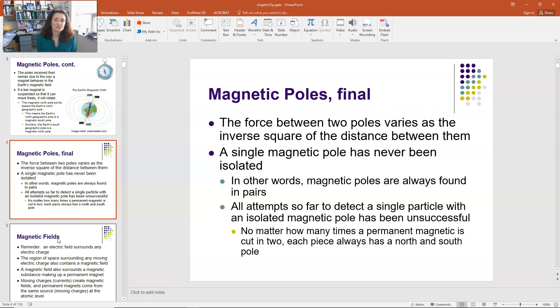Now, although Dirac did postulate the existence of particles which were magnetic monopoles in the 30s, we have not yet found a single magnetic pole. By that, I mean we haven't found a particle that only has one magnetic pole. We haven't found a south pole particle or a single north pole particle. They always come in pairs, right? Even at the atomic level. And all attempts so far to detect a single particle with an isolated magnetic pole have been unsuccessful.